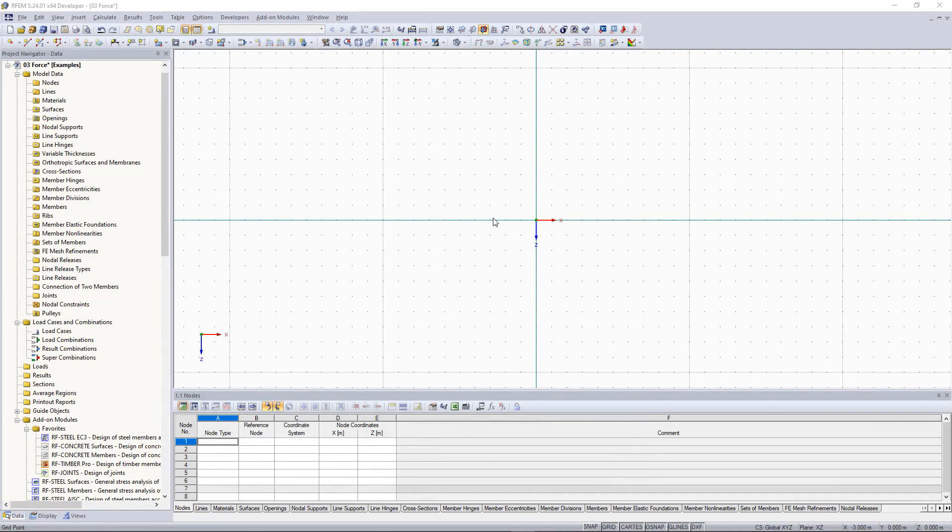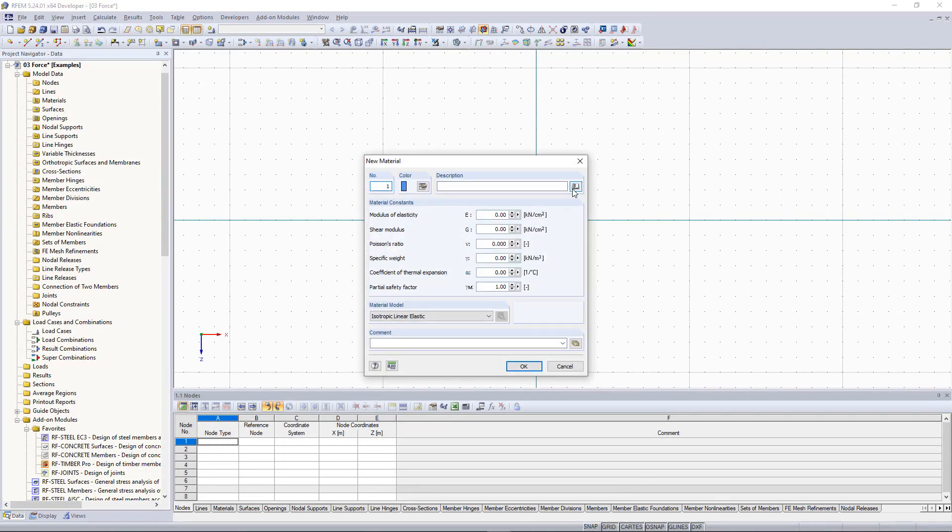Now we apply the theory shown in the earlier example and display the specific weight in RFEM. We create a new material in the data navigator located on the left and open the material library.